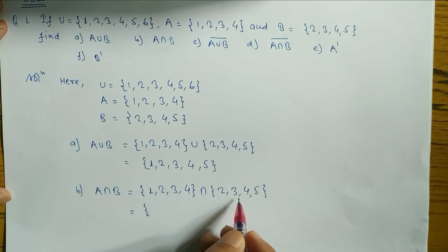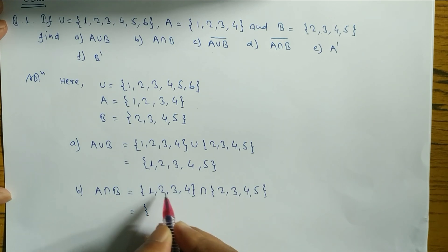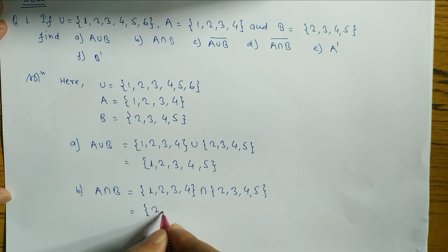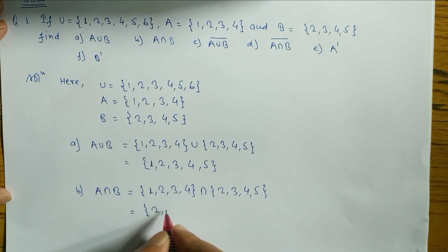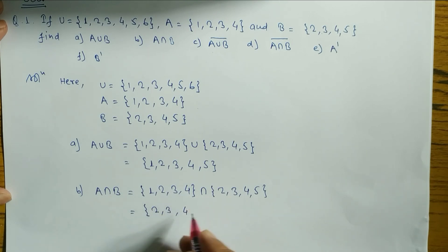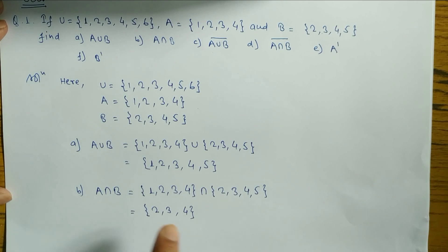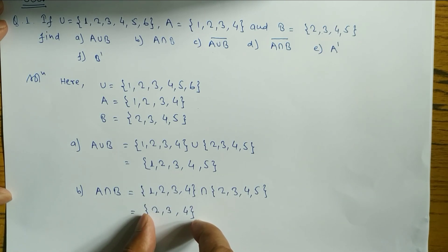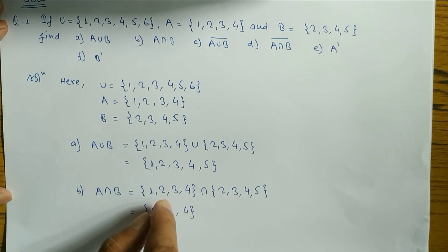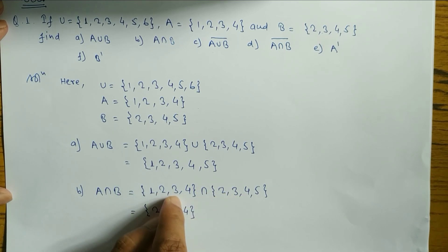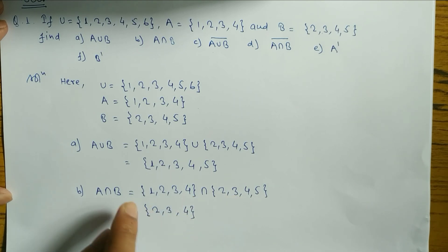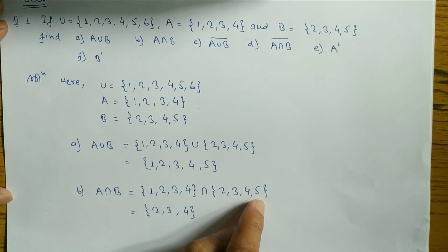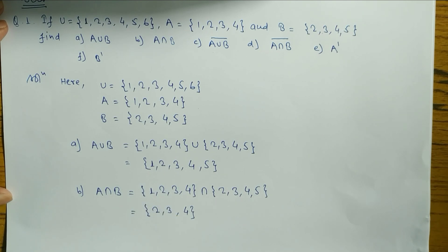Is 1 common? 1 is not in B — no. Is 2 common? 2 is in both A and B — yes, take 2. Is 3 common? Yes, take 3. Is 4 common? Yes, take 4. 5 is in B but not in A — no need to take. So A intersection B = {2, 3, 4}. Intersection means common elements only, no need to repeat.